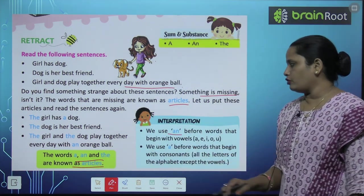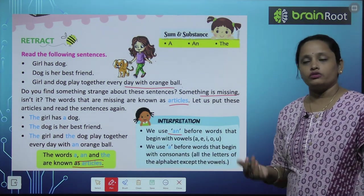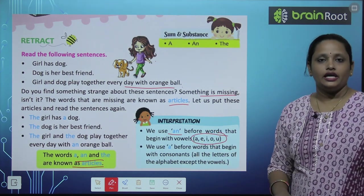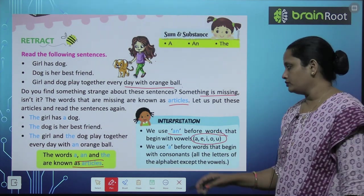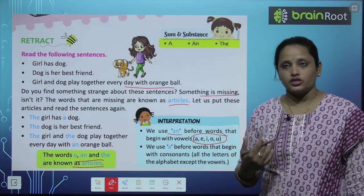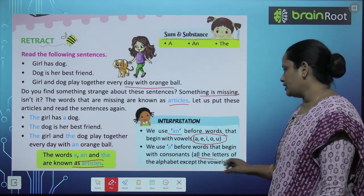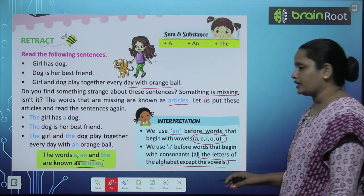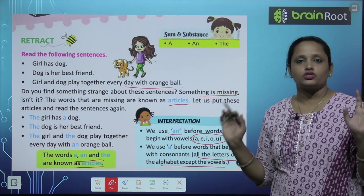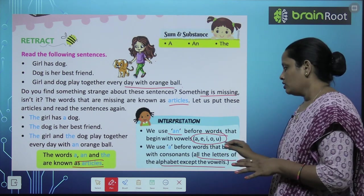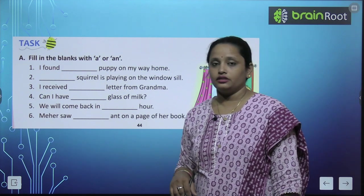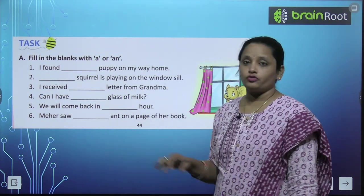We use 'an' before the words that begin with a vowel sound, and these are a, e, i, o, u. We use 'a' with words that begin with a consonant sound — all the letters of the English alphabet except the vowels. Vowels ko chhoḍ ke jitne English alphabet ke letters hain, woh sab consonants hain.